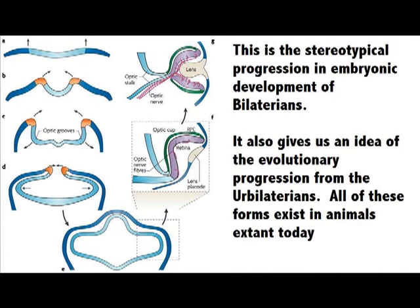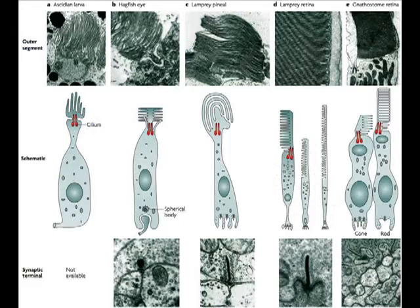It also gives us an idea of the evolutionary progression from the ur-bilaterians. All of these forms exist in animals extant today. In fact, here we see a cellular-level view of the retinas of the ascidian, hagfish, lamprey, and nastostoma.